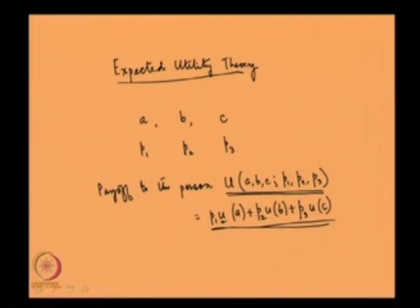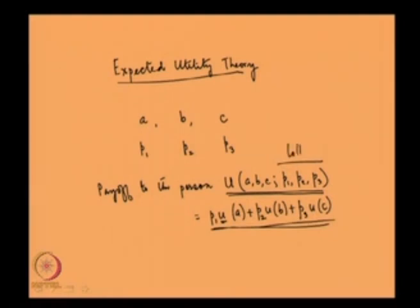This expected utility theory gives us a clue as to how people evaluate their payoffs when the outcomes are not certain. By knowing this, I can represent the payoff of a player from an uncertain situation — this is called a lottery. From a lottery, by this formula, I can know whether a player will prefer one lottery over another lottery.